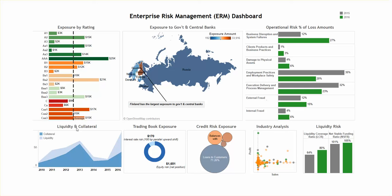Liquidity and Collateral is a dual-axis chart. It shows the values for years 2010 through 2016, and it shows collateral in blue and liquidity in the lighter blue color.